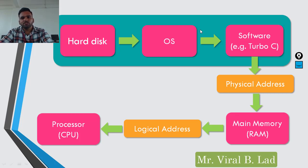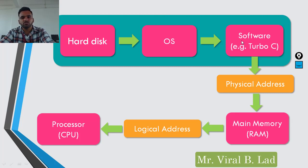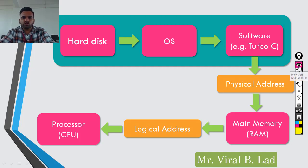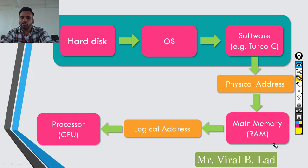Our main program is inside the hard disk. Inside the hard disk, the operating system is there, and according to our requirements we install applications — all these things are stored inside the hard disk. When you execute or run a program, all that information goes to main memory, that is, inside the RAM.